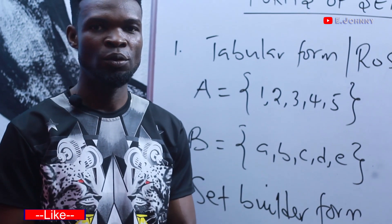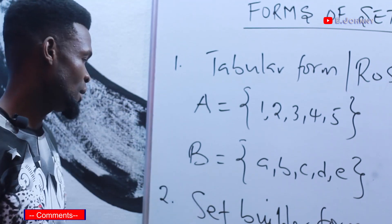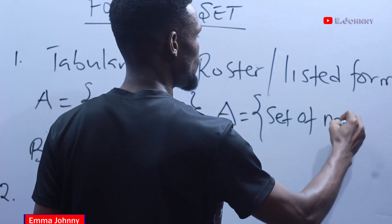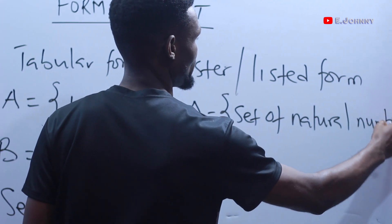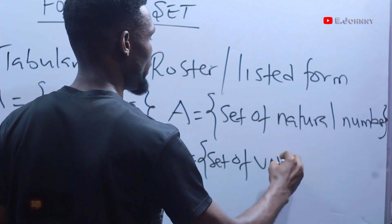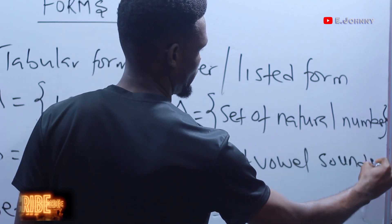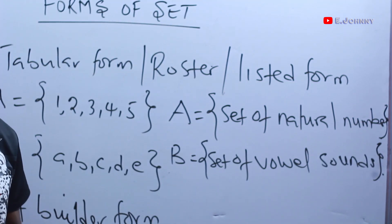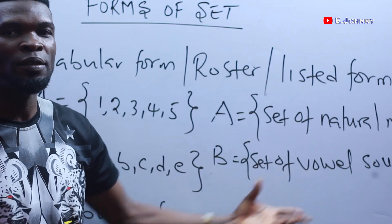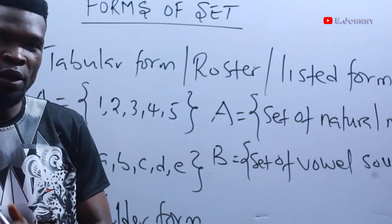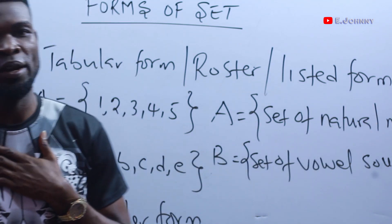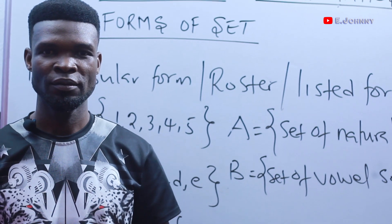In set builder form, the elements of the sets are not listed, but the set is described by properties from which you can list the elements. For example, if A is a set of natural numbers, or B is a set of vowel sounds — the elements are not listed. The first thing you must do is figure out how to write out the elements of the set.